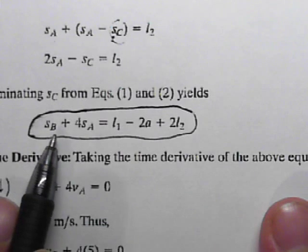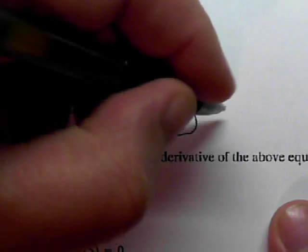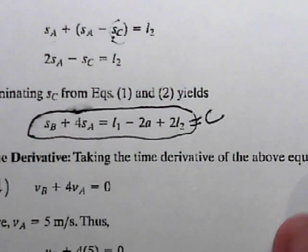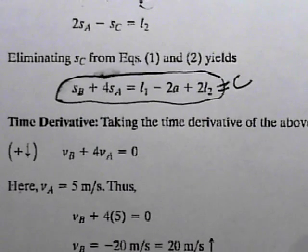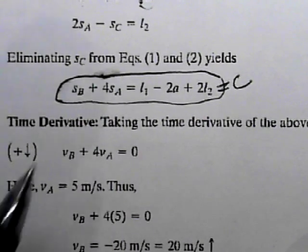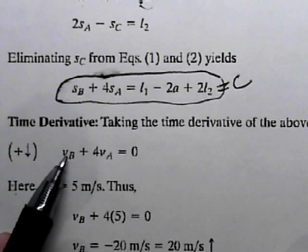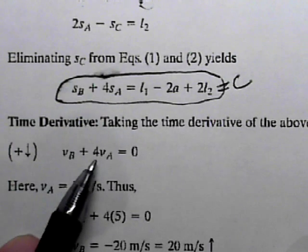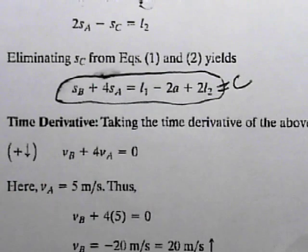Okay, an equation that involves S_B, S_A, and all this constant stuff, which is really just a single constant. We don't care about the details of that constant. Now, that's our position equation. If we take the time derivative of this thing, then time derivative of S_B is V_B. The time derivative of 4S_A is 4 velocity A, and the time derivative of all of those constants is a zero.